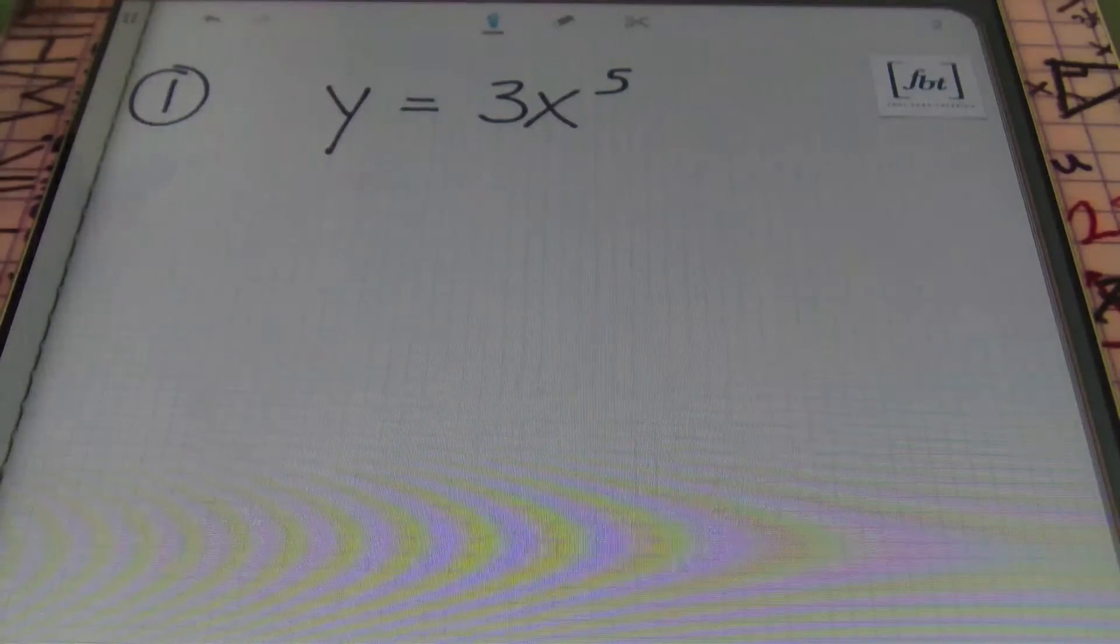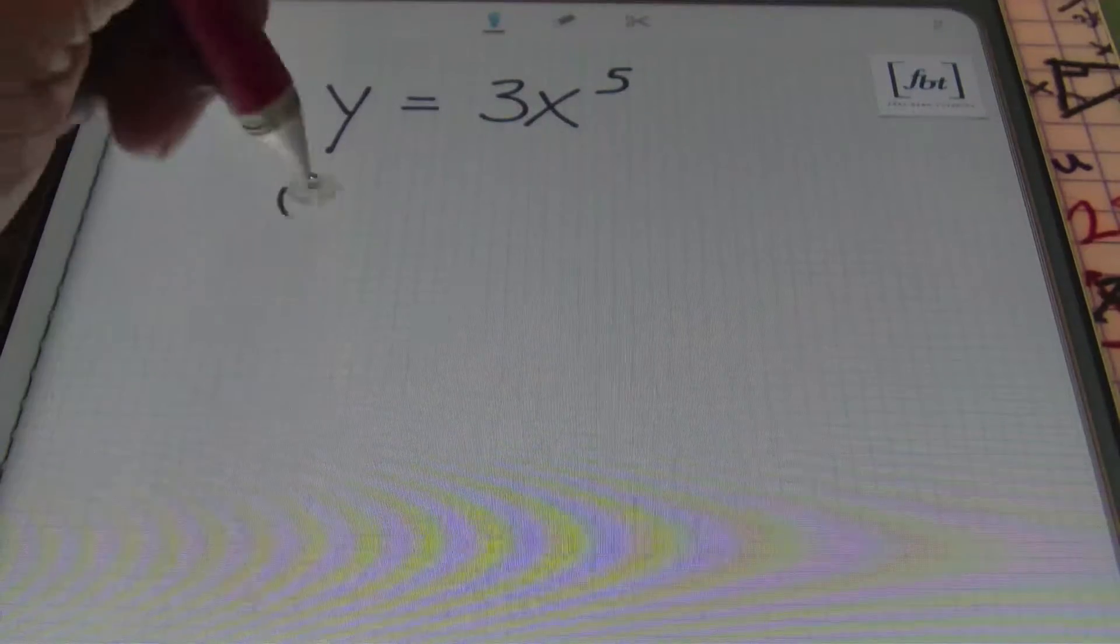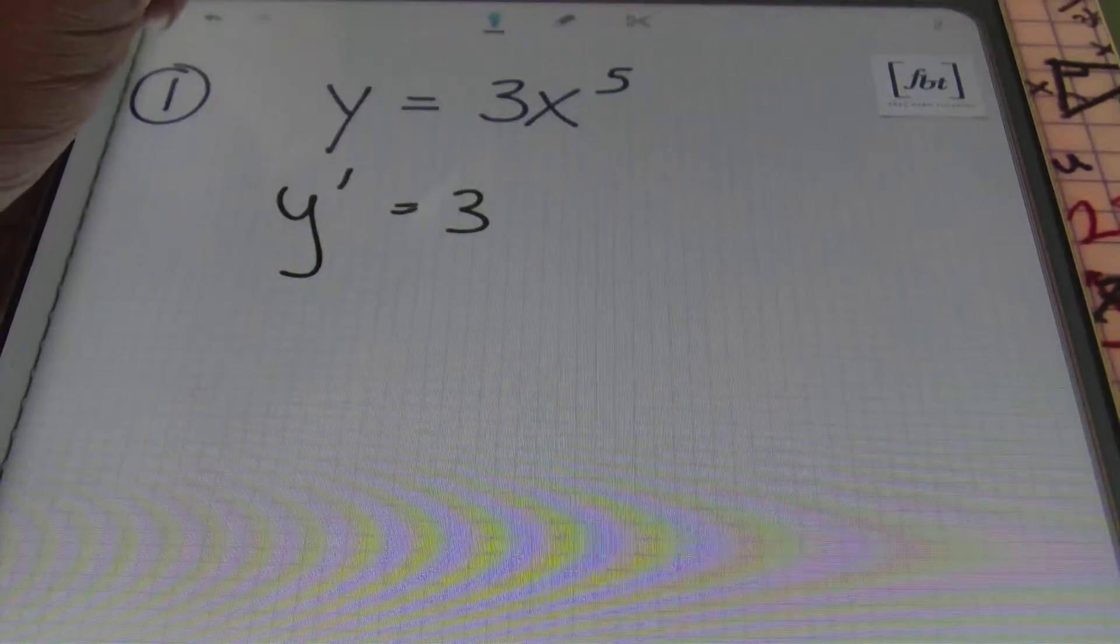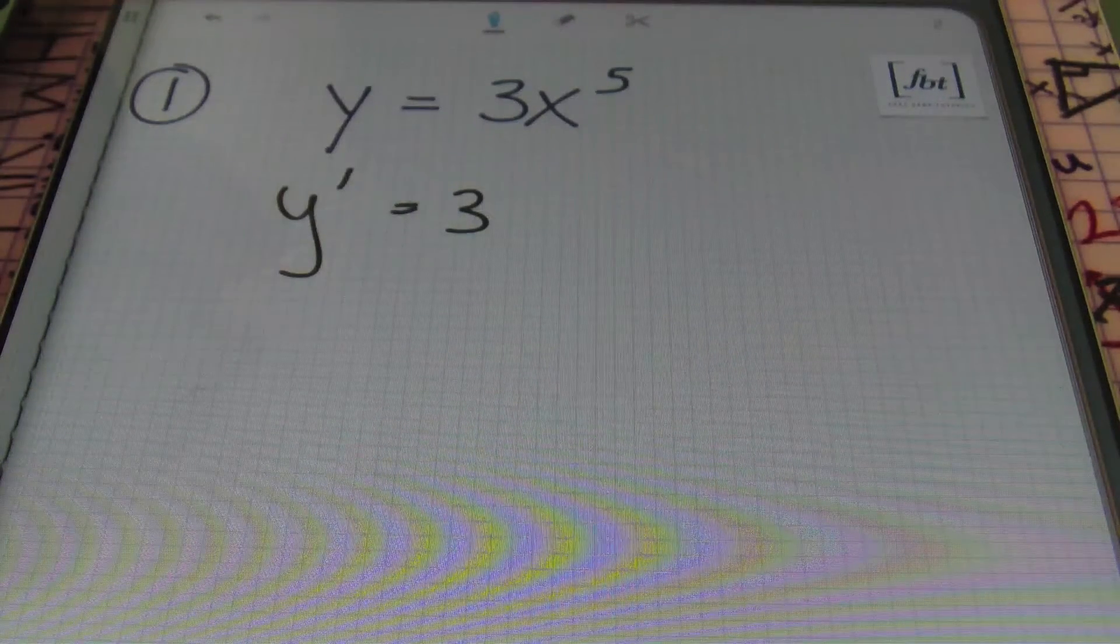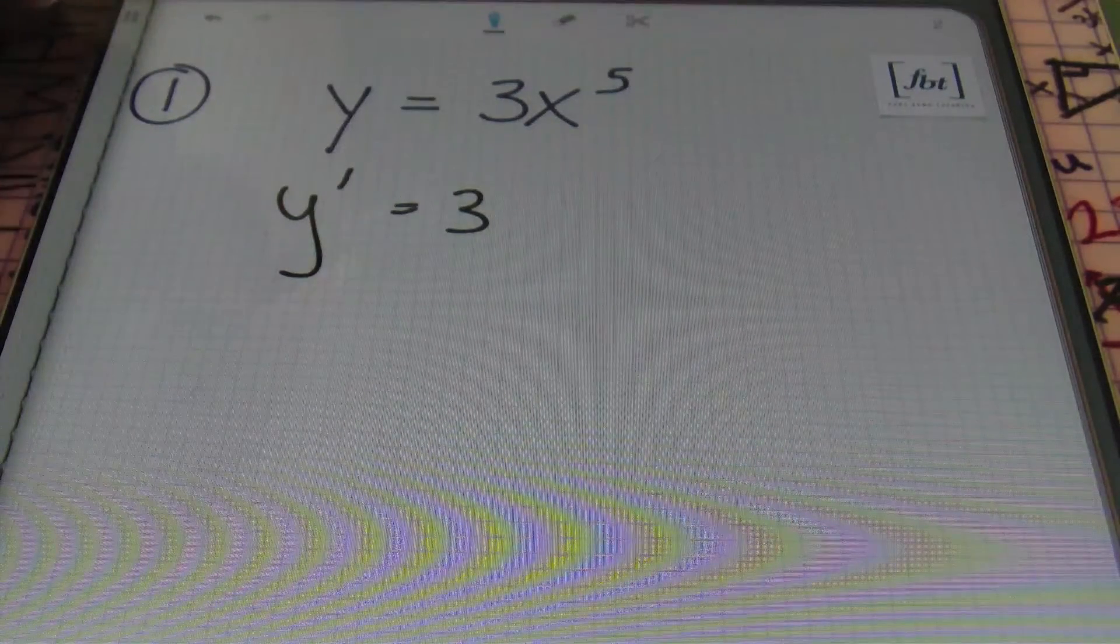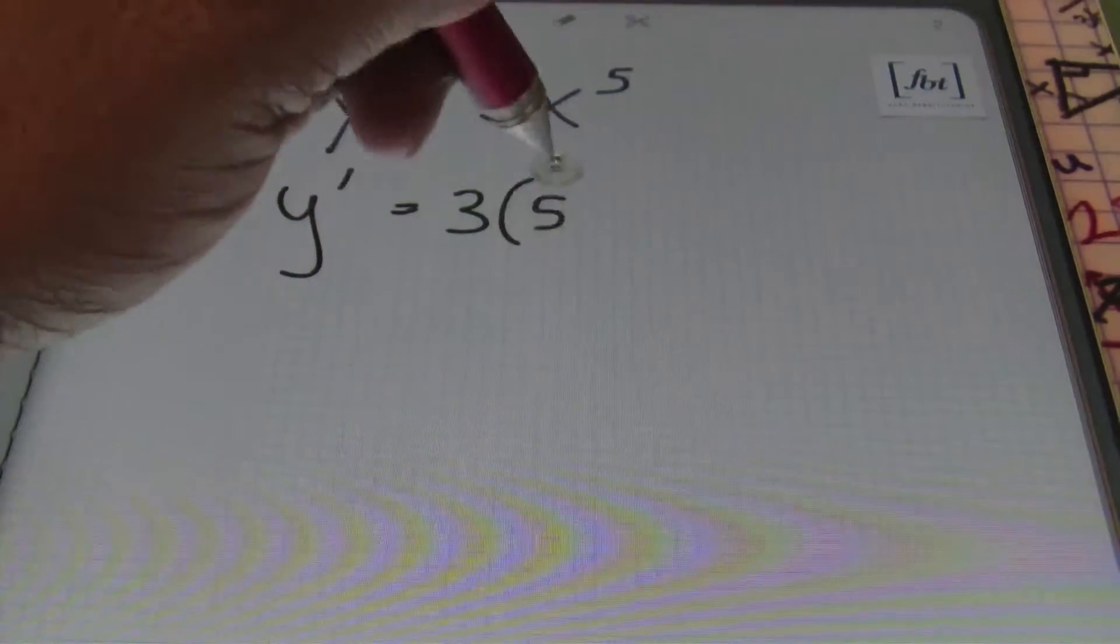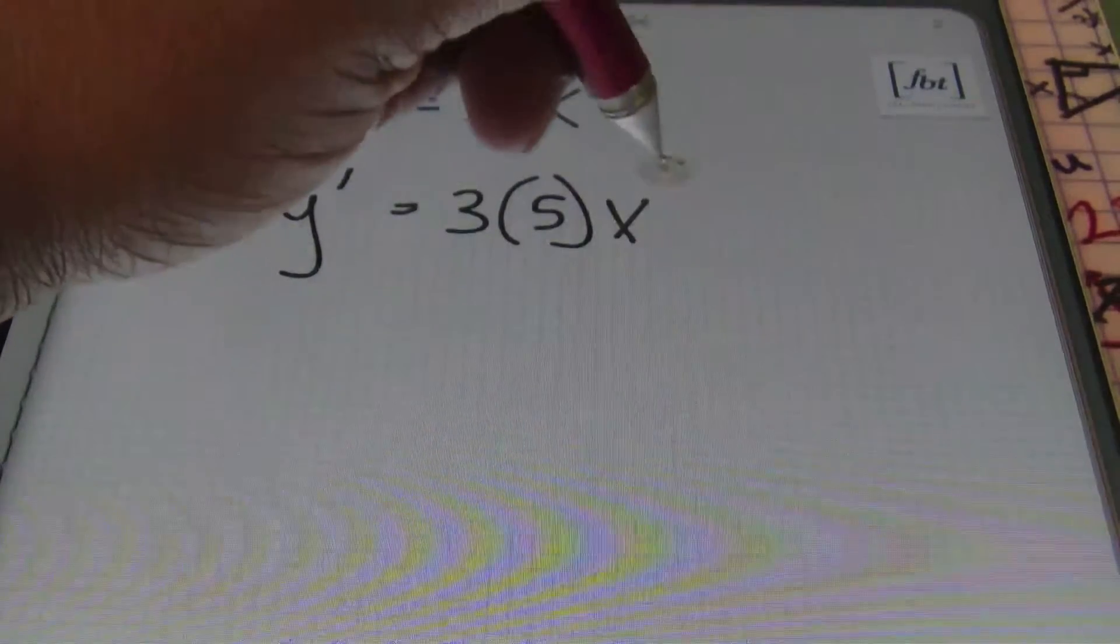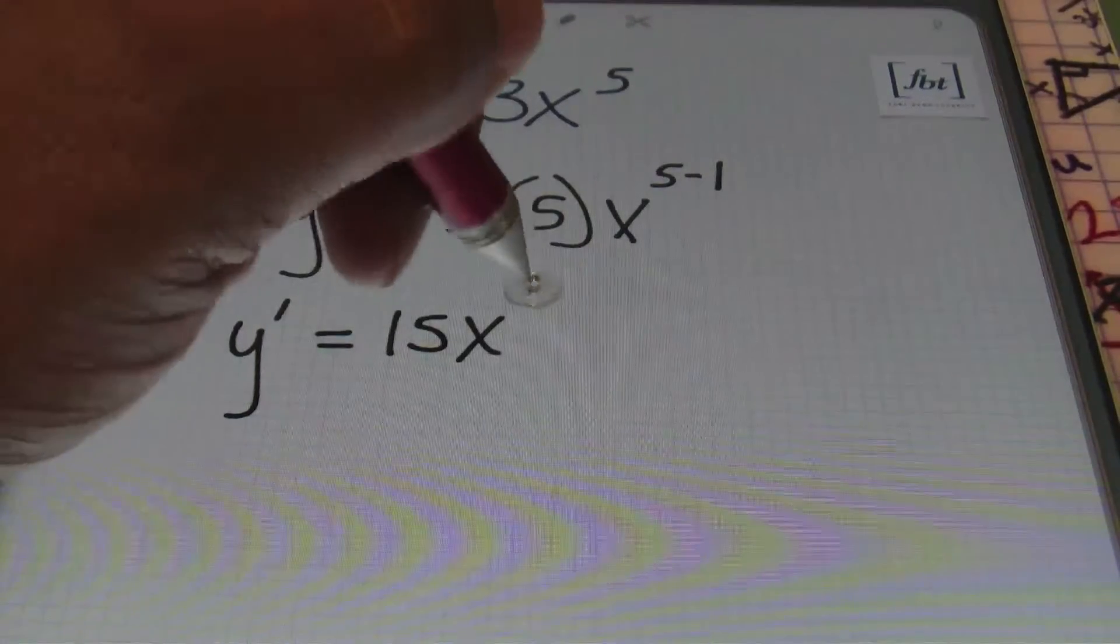In problem number one we have y equals 3x to the fifth power. Notice that we have a coefficient of 3. When finding your derivative, that coefficient that you start off in your original problem will remain there. So it will just multiply times the result of the derivative that you're finding when using the power rule. So for now I'm just going to bring down that coefficient of 3, then using the power rule, the 5 comes down and multiplies with that initial coefficient of 3, and I'll end up with x to the 5 minus 1, which gives me a result of 15x to the fourth power.